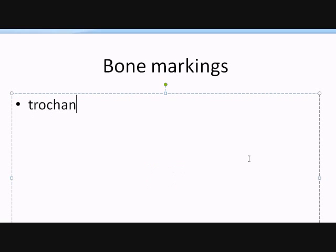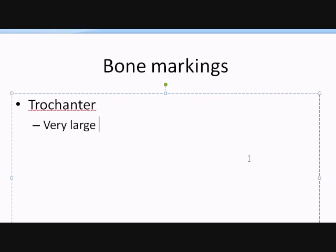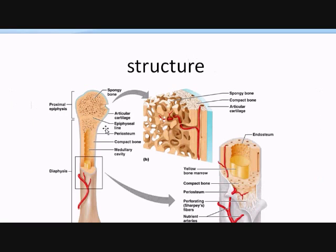For the bone markings, let's talk about a few of the projections. We have the trochanter — a very large, irregularly shaped process. Remember, a process is essentially a pointing or protrusion of some sort. So when you talk about a trochanter, you're talking about a large, irregular-shaped process.